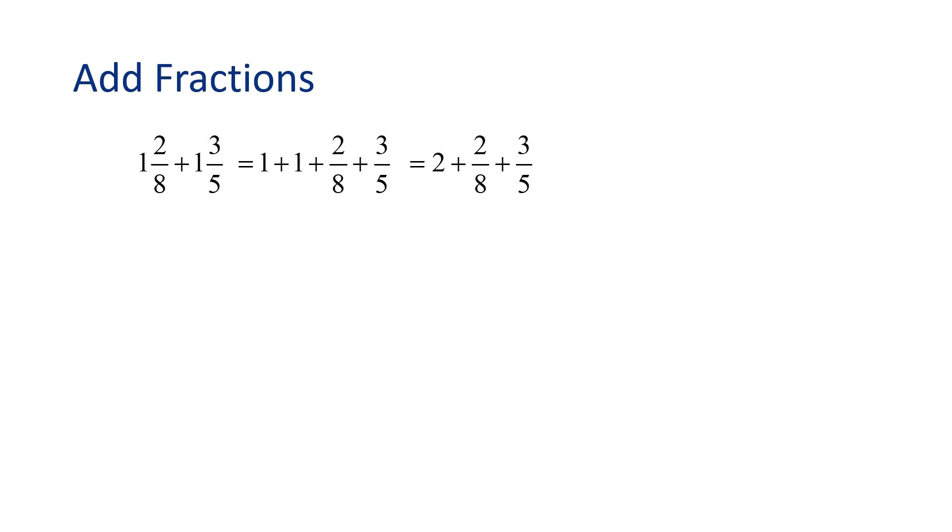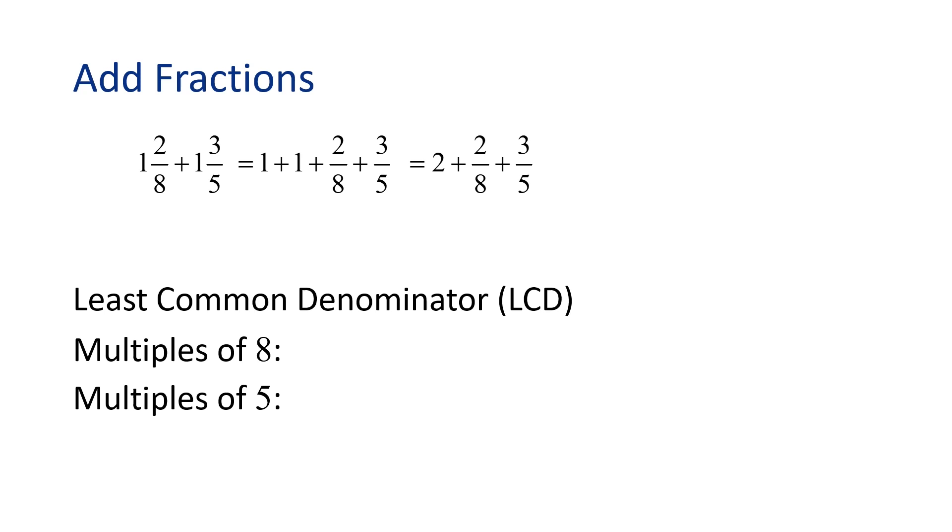Remember, we need to find the least common denominator, or LCD, of 8 and 5 so we can add the fractions together once we have a common denominator. Let's start by finding the multiples of 8 and 5.